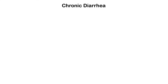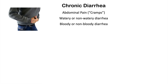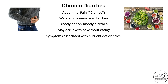Let's look at more specific signs and symptoms associated with chronic diarrhea. There will be abdominal pain and cramps. It's important to characterize the stool — is it watery or non-watery, bloody or non-bloody? It's also important to note whether the diarrhea occurs with or without eating. Additionally, think about symptoms related to nutrient deficiencies, as some medical conditions causing chronic diarrhea also impair nutrient absorption.